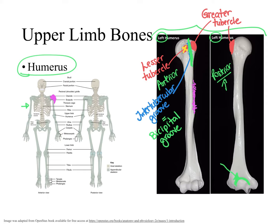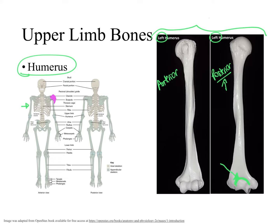Notice that the head of the humerus has a smooth, rounded appearance because it is used in articulation to form the glenohumeral joint. The greater and lesser tubercles are rough because they serve as muscle attachment points, not articulation surfaces. In the distal aspect of the humerus, this part is very smooth — both anteriorly and posteriorly — because these smooth areas articulate with other bones.